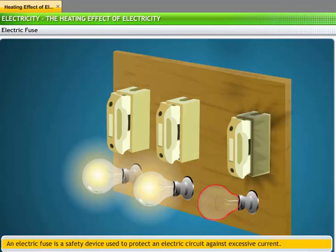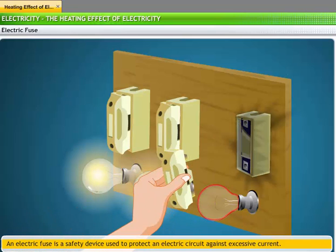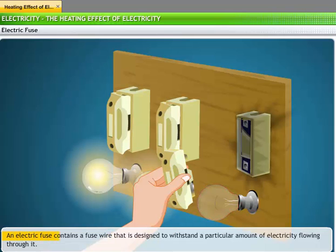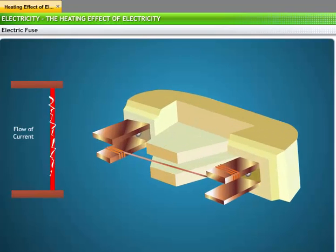You may have often heard people talking about replacing the fuse in their homes because the fuse blew, cutting off the power supply. An electric fuse contains a fuse wire that is designed to withstand a particular amount of electricity flowing through it. When the electric supply fluctuates and the current becomes too strong for the wire, it melts and breaks the supply of electricity.